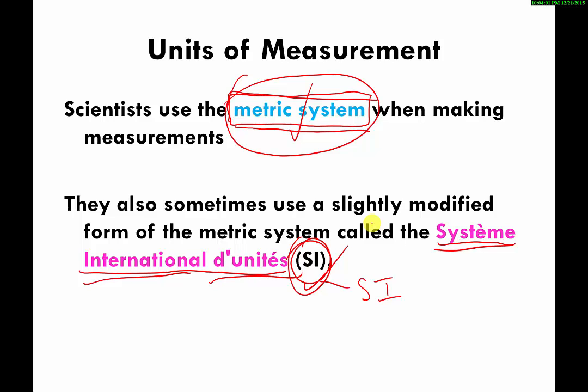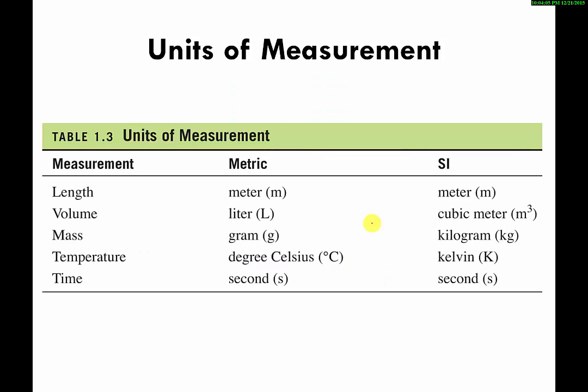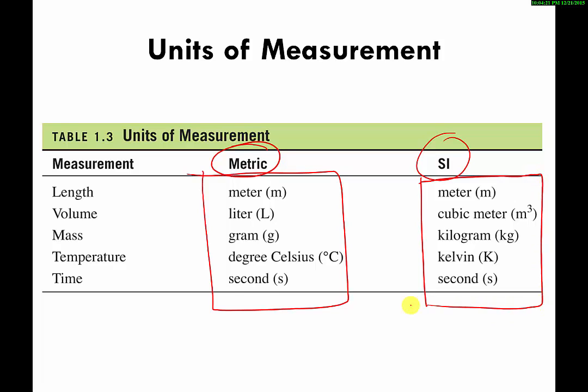Here is a collection of some units used in the metric system and the SI system. Let me explain what I want you to know. You can measure the length of things - basically the distance between two points, like how tall you are from the top of your head to the bottom of your feet. The metric system has a special unit for measuring length called the meter. You need to know the abbreviation is a lowercase letter m. The SI system also uses the meter.